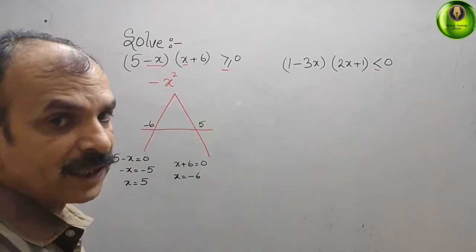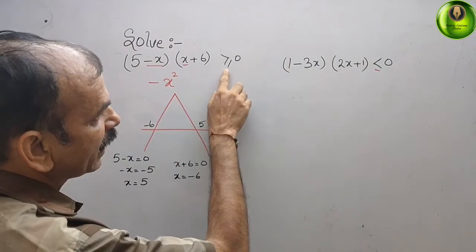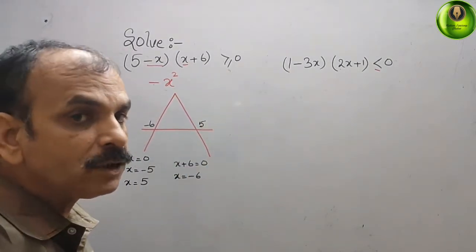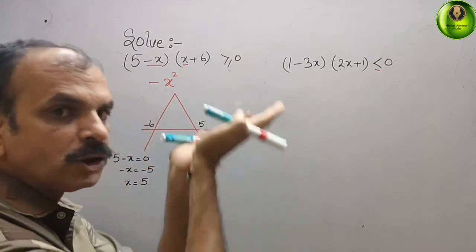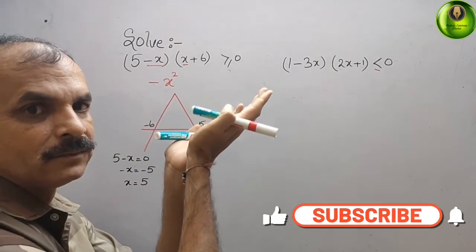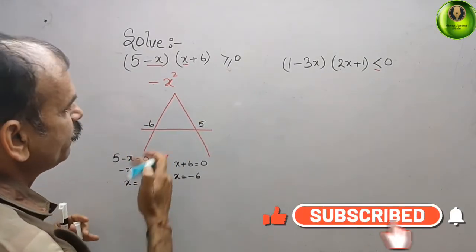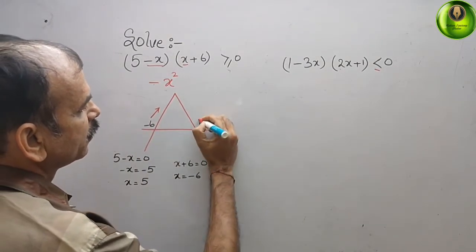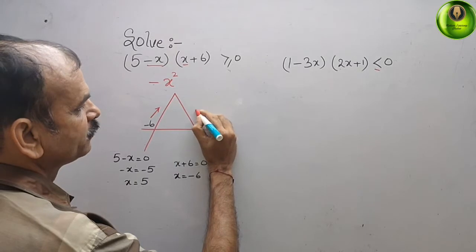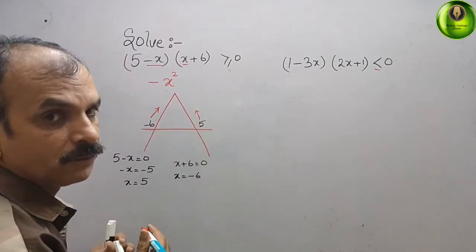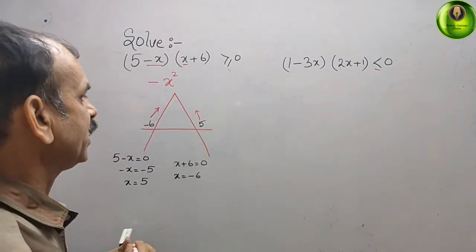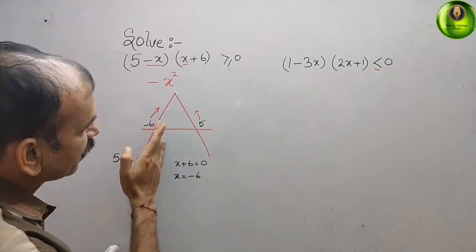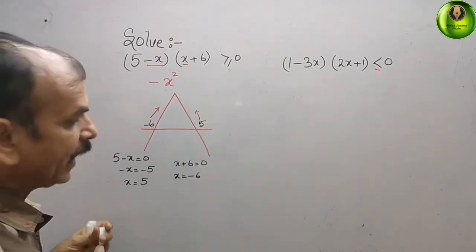Now we check the inequality sign — it is greater than or equal to 0 — that means we have to move toward the positive side, which is the upward side of the parabola. So we move toward this upward positive region. After minus 6, if we draw a line like this...